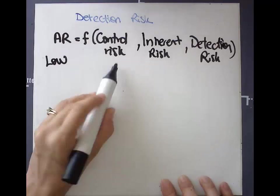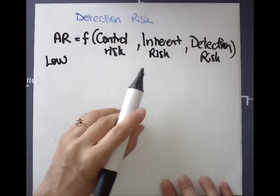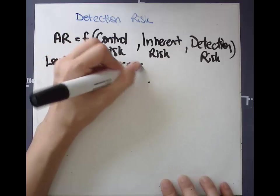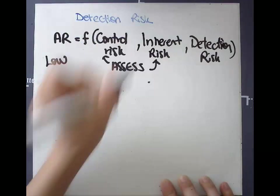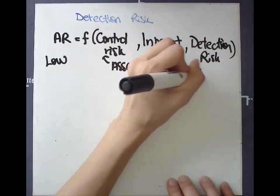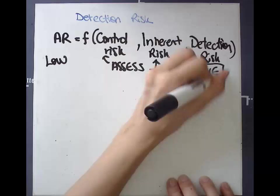The partner and staff assess the level of control risk and inherent risk, and so then we normally solve for detection risk.